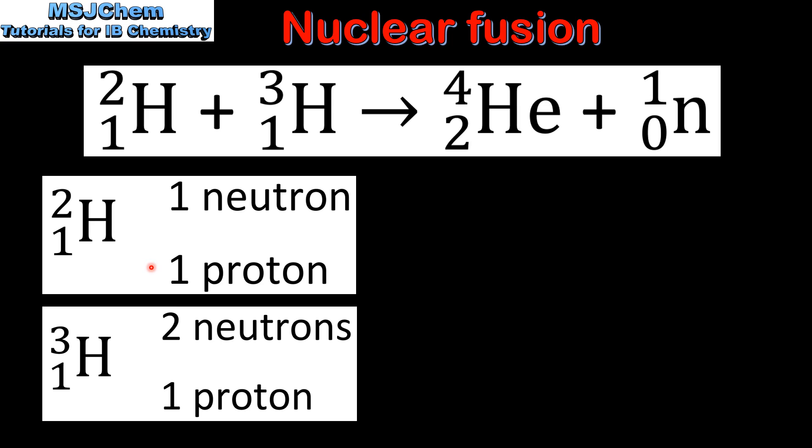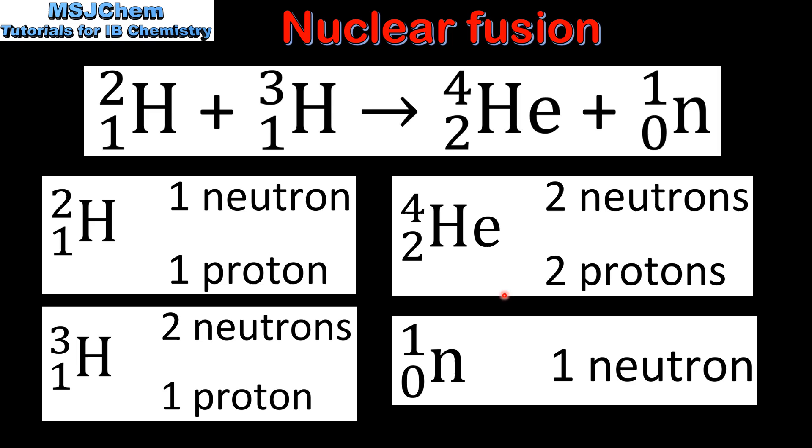So on the left side of the equation we have two protons and three neutrons. Helium has two protons and two neutrons. So on the right side of the equation we have two protons and three neutrons. So here we can see we have the same number of protons and neutrons on both sides of the equation.